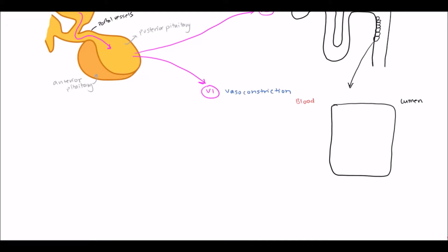Inside the principal cells, we have vesicles lined with channels called aquaporin-2 channels. When ADH comes in from the blood, it activates the vesicle, which travels to the luminal membrane of the cell and inserts those aquaporin-2 channels into the lumen.